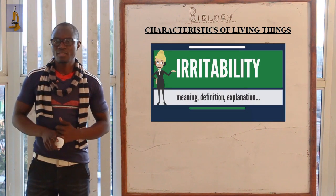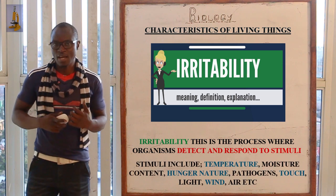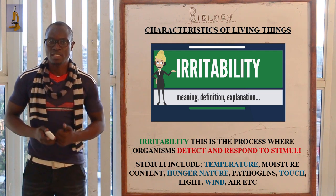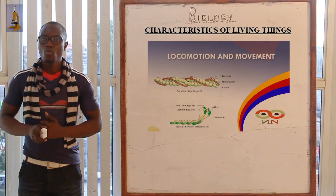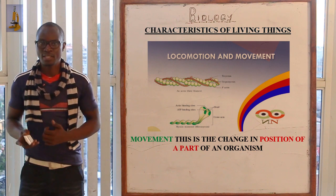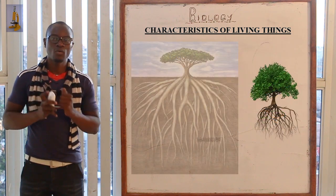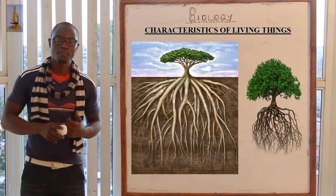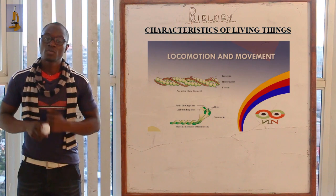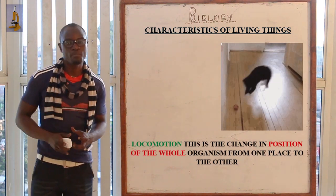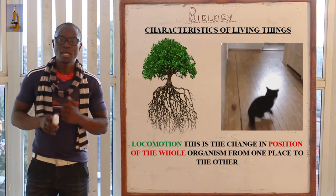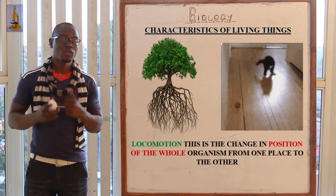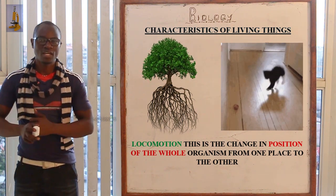Irritability is the process where organisms detect and respond to environmental stimuli using nerves or hormones. We also have movement and locomotion — movement is the changing position of parts of the organism, while locomotion is the changing position of the whole organism from one point to another. Plants only exhibit movement; animals exhibit both movement and locomotion.